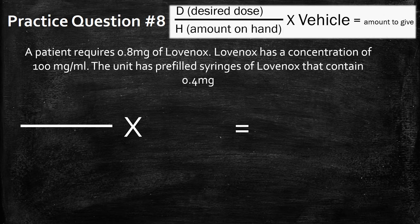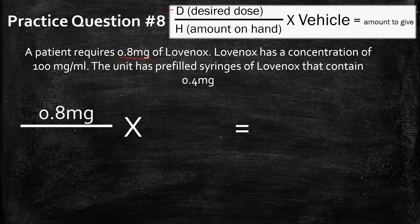Let's pull up our formula. This question is another one of those trick questions, but let's work through it together. So the desired dose is obviously 0.8 milligrams. Now the amount on hand — it's super easy to get thrown off in a question like this, because typically you would look at the concentration, but that's not really where you should be looking.